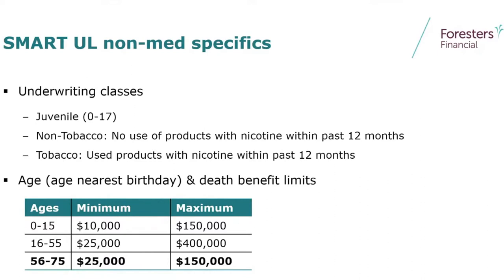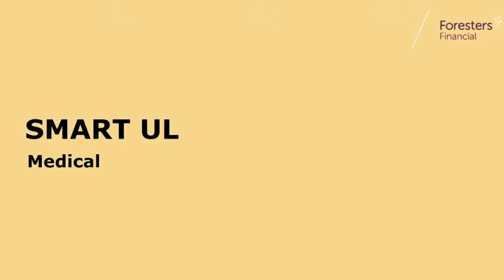Our height and weight chart is extremely liberal — six feet, 307 pounds. So if somebody lives on Krispy Kreme every day, they've got an opportunity to get a product at a standard rate. And should you write this on a juvenile, you can see that we will go as low as $10,000 and as much as $150,000 non-medical. A very wide opportunity of coverages on a non-medical basis.